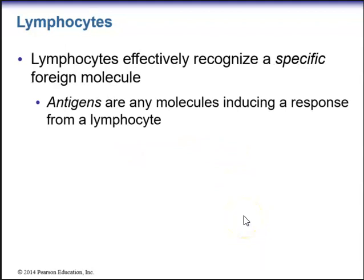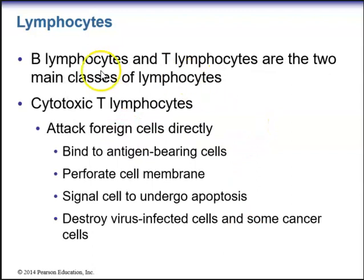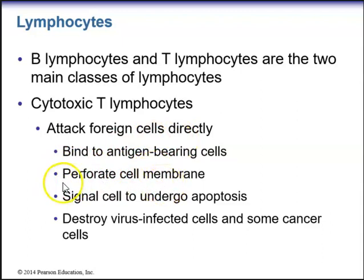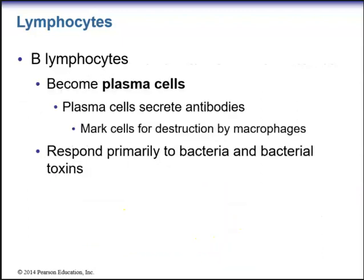Lymphocytes effectively recognize a specific foreign molecule called an antigen. Antigens are any molecules that induce a response from a lymphocyte. B-lymphocytes and T-lymphocytes are the two main classes of lymphocytes. Cytotoxic T-lymphocytes attack foreign cells directly — they bind to antigen-bearing cells, can perforate the cell membrane, and signal that foreign cells undergo apoptosis or programmed cell death, destroying virus-infected cells and some cancer cells. B-lymphocytes become plasma cells that secrete antibodies, marking cells for destruction by macrophages. B-lymphocytes respond primarily to bacteria and bacterial toxins.